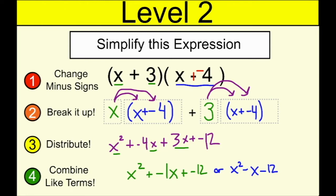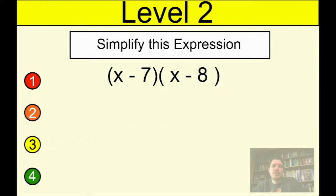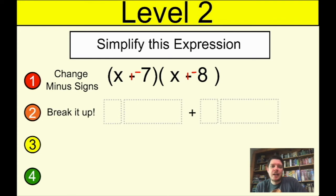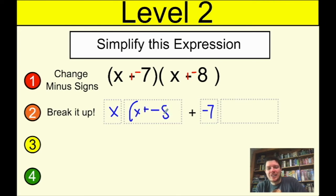That was example one. Let's do another one at the same difficulty level. Step one: change minus signs — we'll make that 'plus negative seven' and 'plus negative eight.' Step two: break it up. The first term goes in the first spot, the second term goes in the second spot, and then we write the second set of parentheses twice.